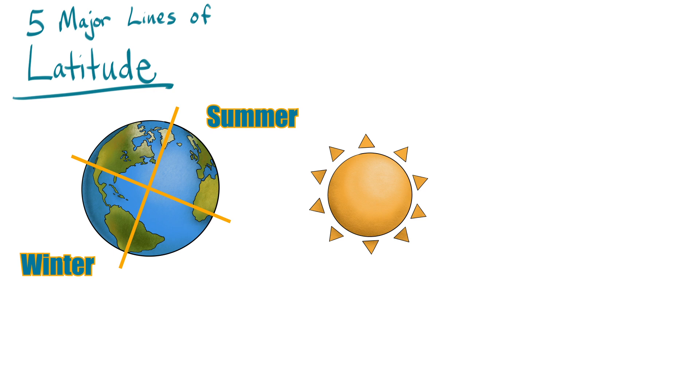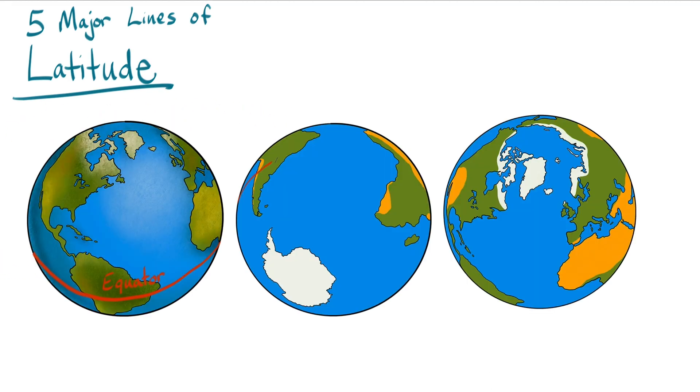That brings us to two more very important lines of latitude: the tropics. There are two lines of latitude on the Earth, one north of the equator and one south of it. They are located 23 and a half degrees above and below the equator. That is an odd number, I know, but there is a reason why those lines were placed right there.